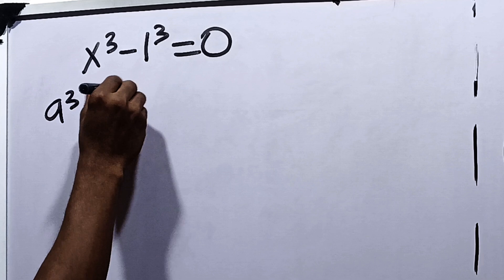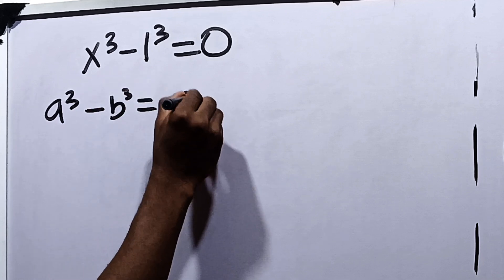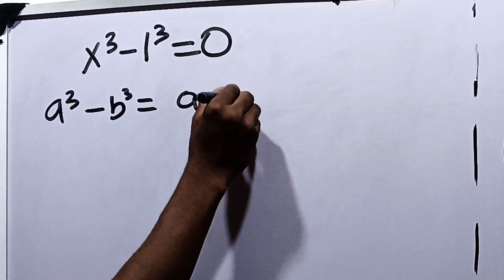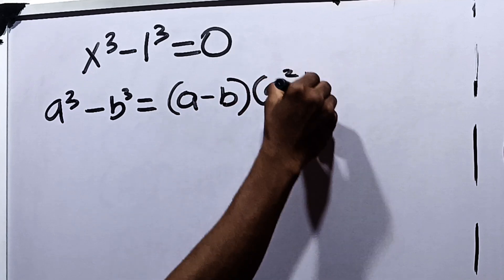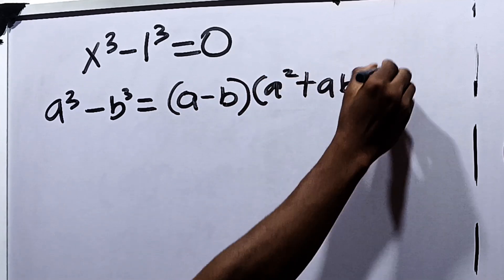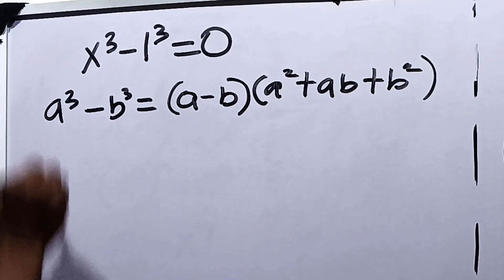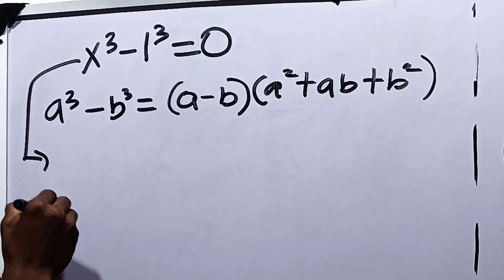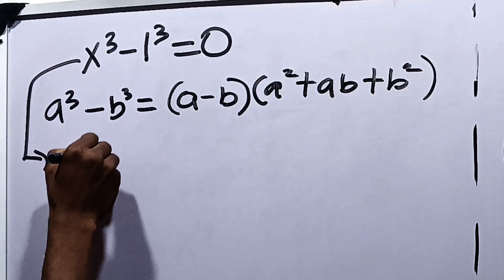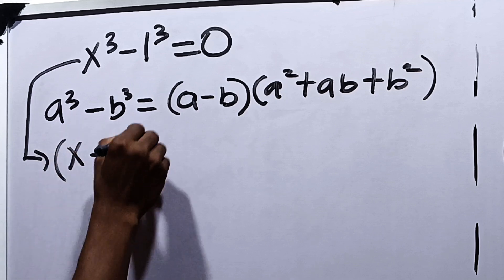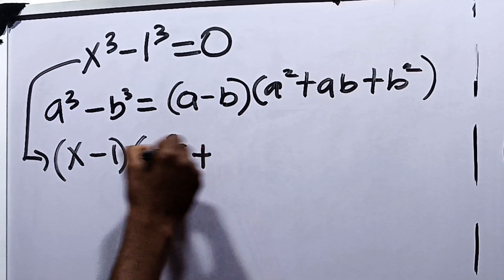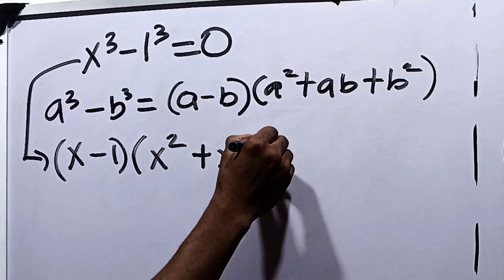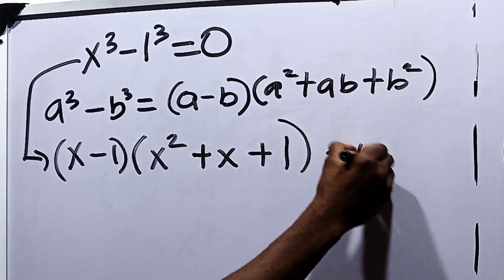If you have a cube minus b cube, it's equal to a minus b, multiplied by a squared plus ab plus b squared. Applying this law here, you will now have that this becomes x minus 1 multiplied by x squared plus x plus 1, and this is equal to 0.